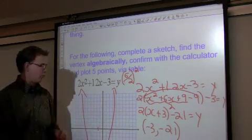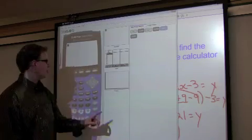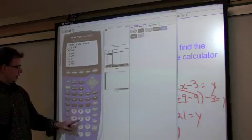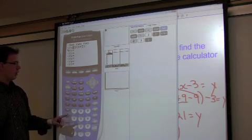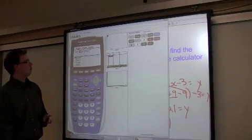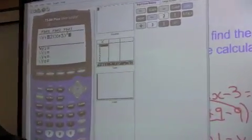The question also says plot five points. To plot five points, we can go to our calculator. We can also check this answer. x plus three squared and minus 21.